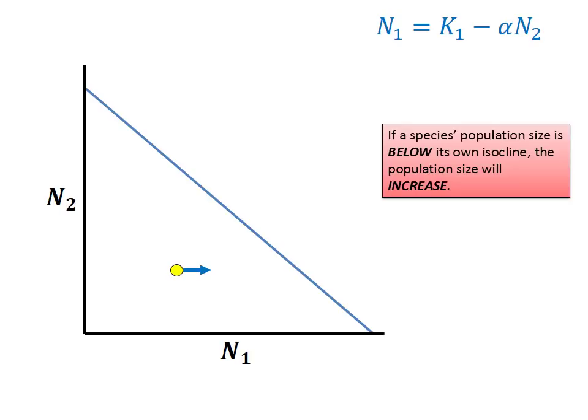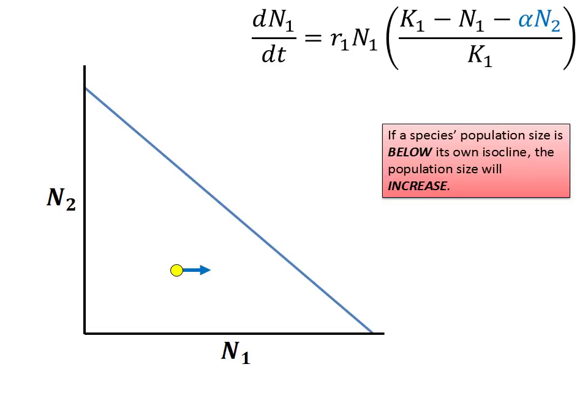So revisit our modified equation for population growth that you saw a few slides ago. Now recall that under zero growth conditions, this numerator was equal to zero. If we reduce n2, the numerator of this fraction will go from being zero to a positive number, which will in turn change dn over dt from zero to a positive number. The population size of species 1 will now get larger.